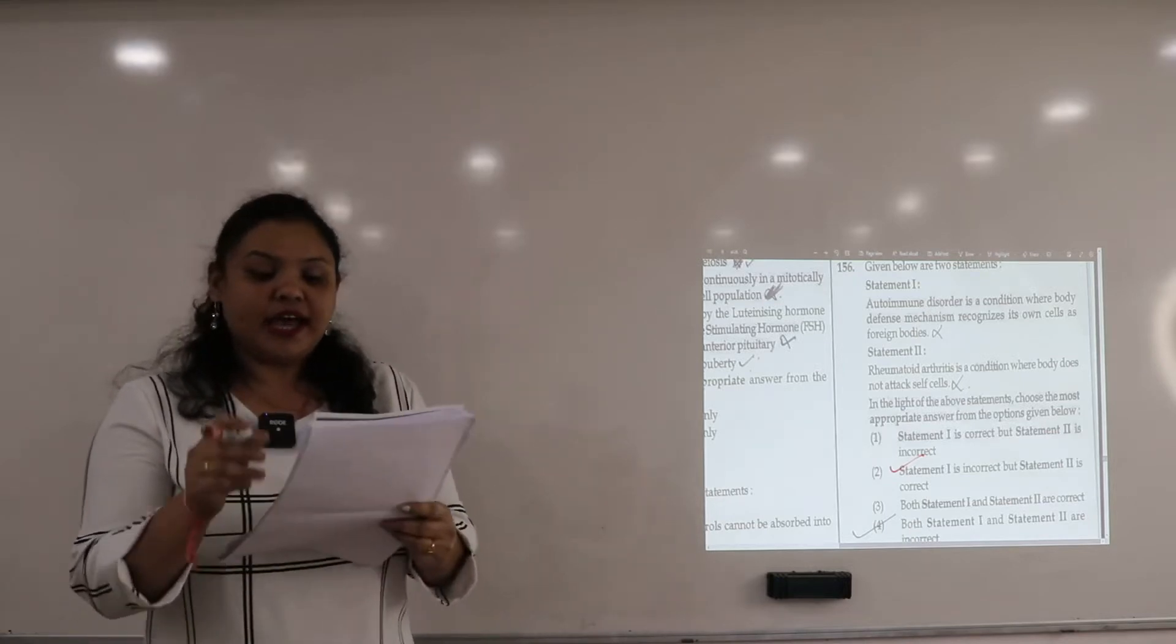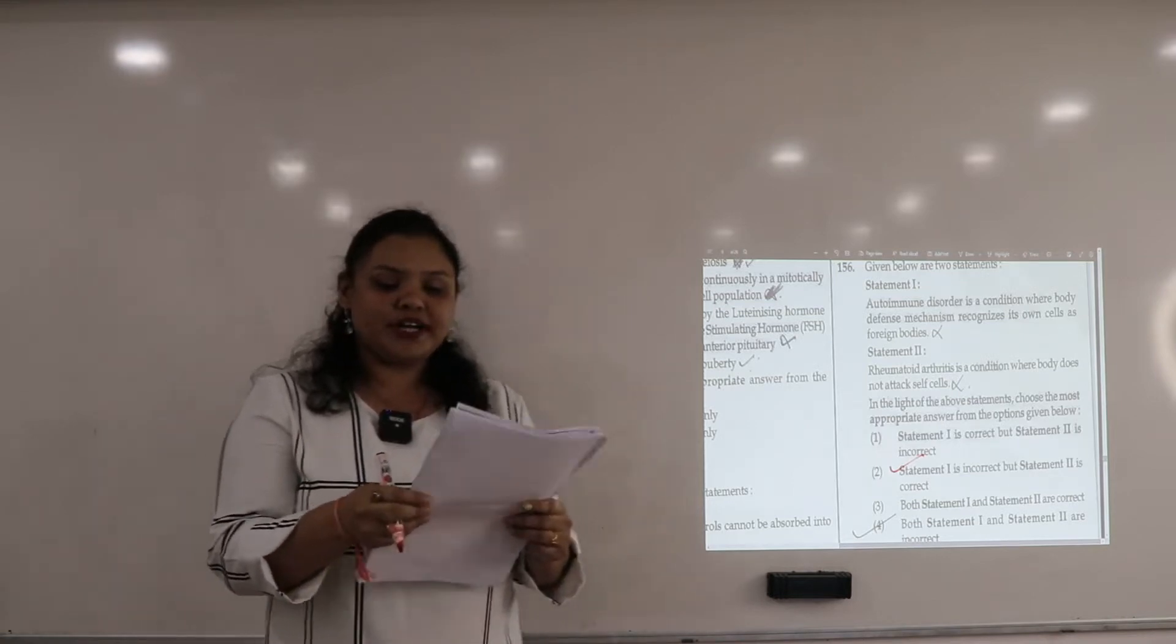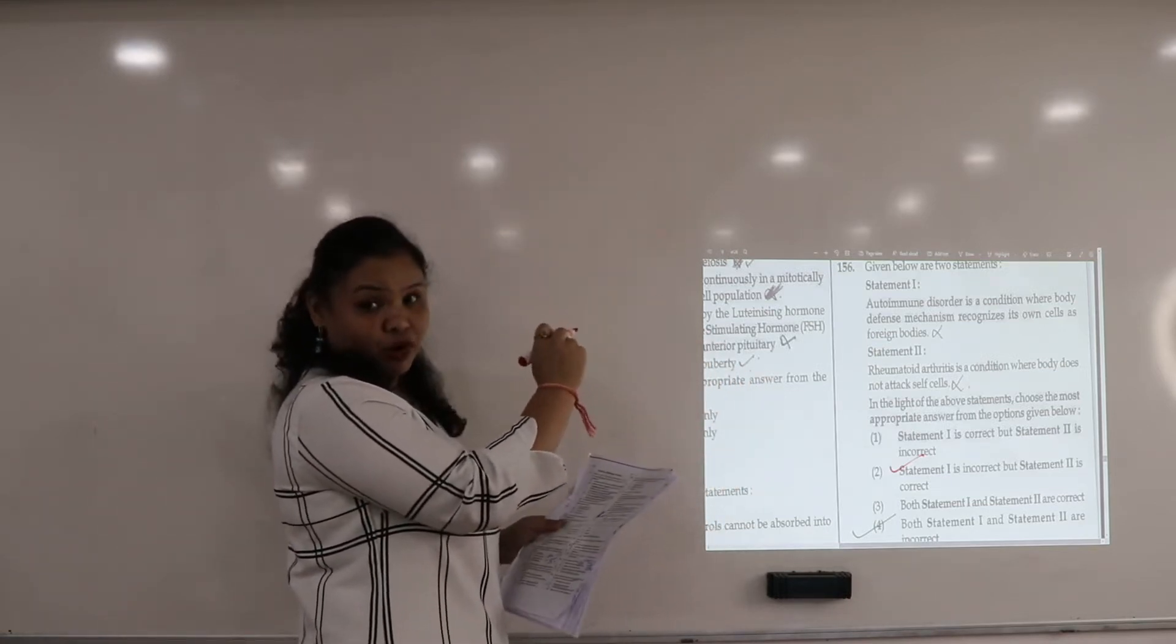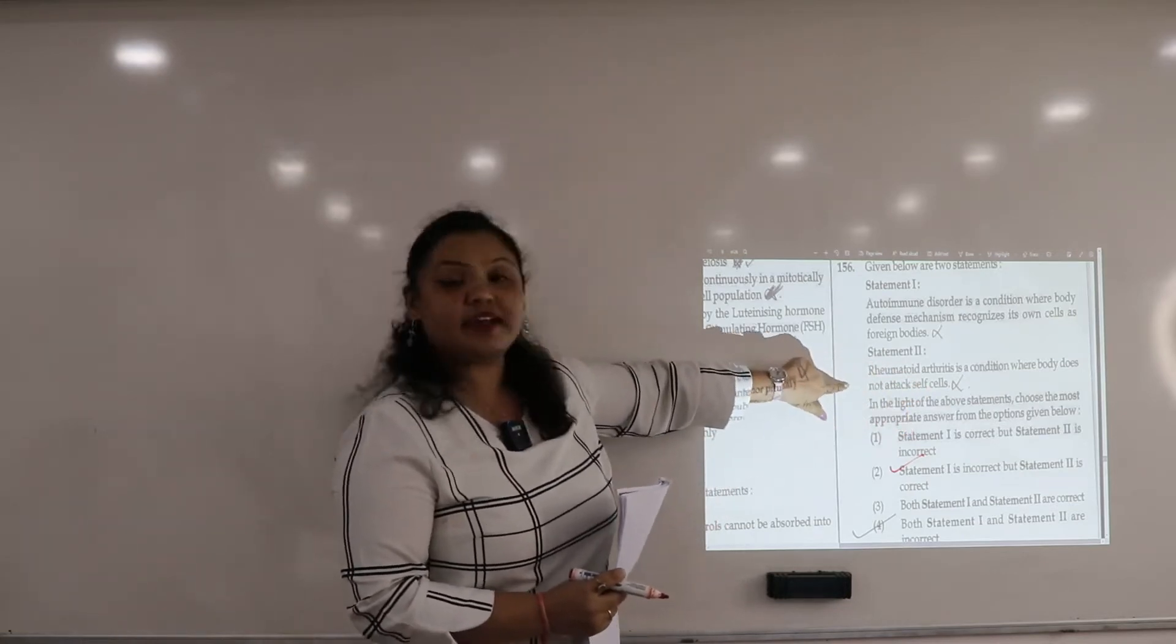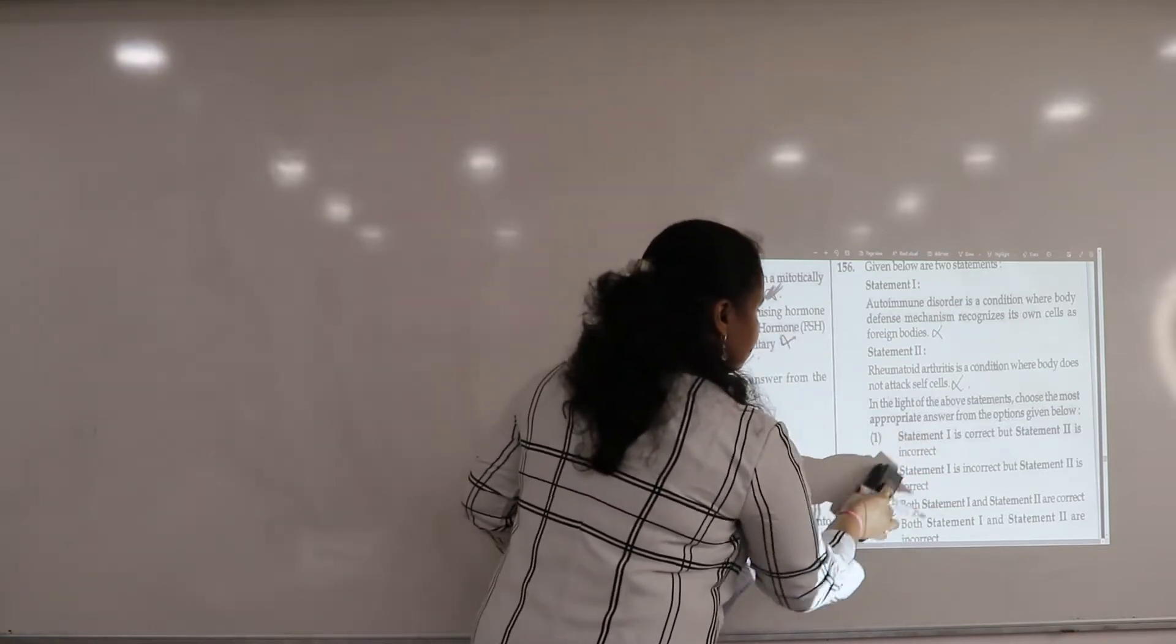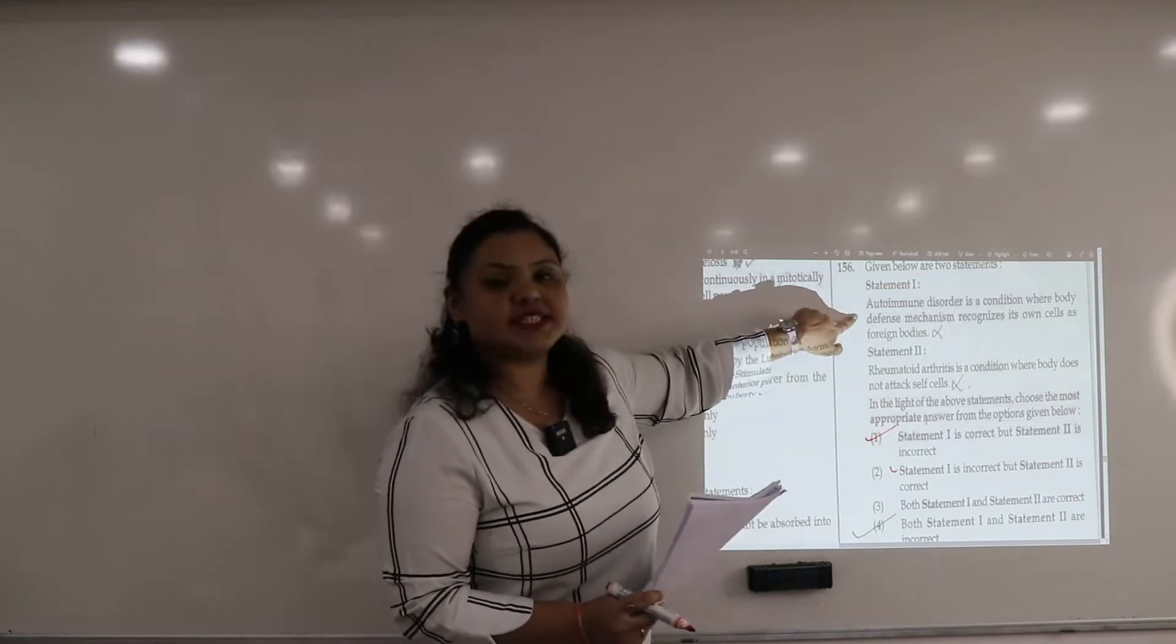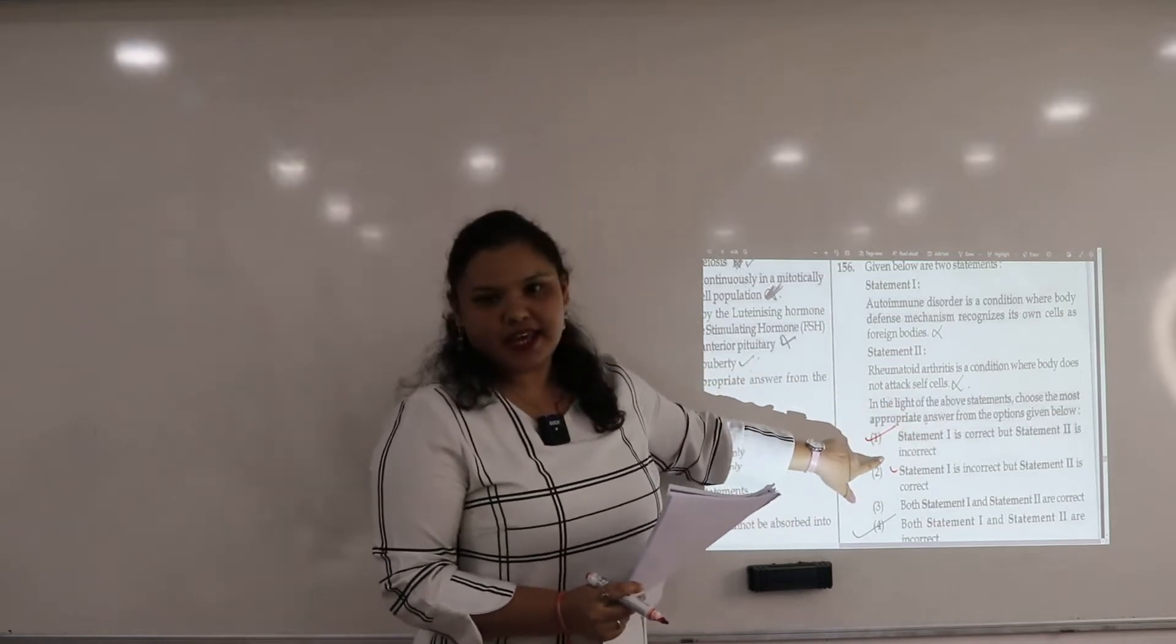This is the autoimmune disorder and the statement two says rheumatoid arthritis is a condition where body does not attack the self-cells. They are saying that rheumatoid arthritis is an example of autoimmune disorder and they attack the self-cells, but the statement is saying does not attack. So the right answer for this question will be first. It says statement one is correct, it is defining the point of autoimmune disorder, but statement second is incorrect.